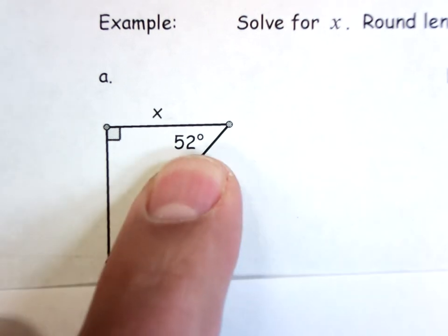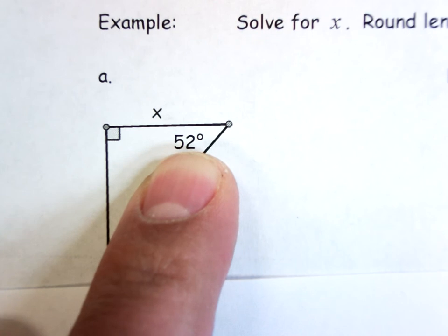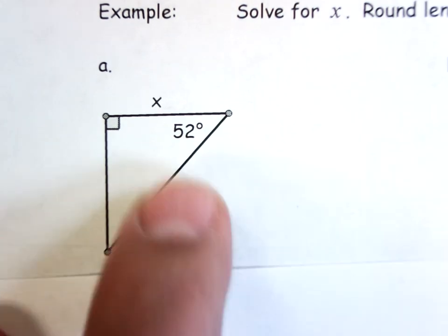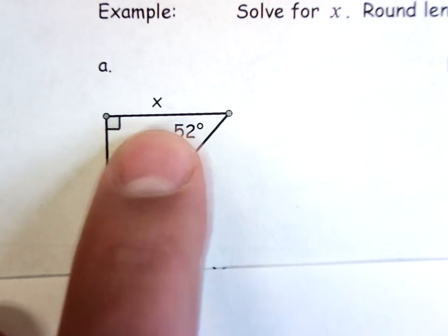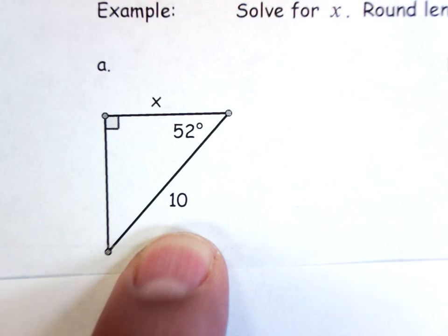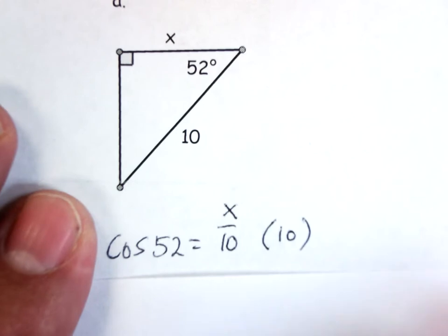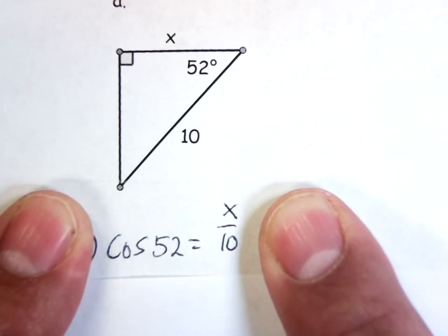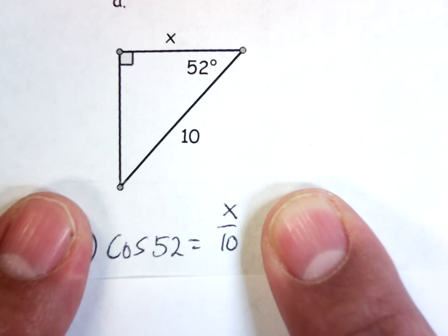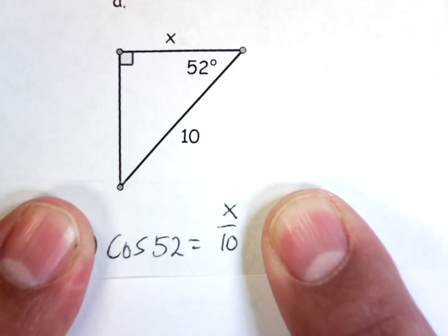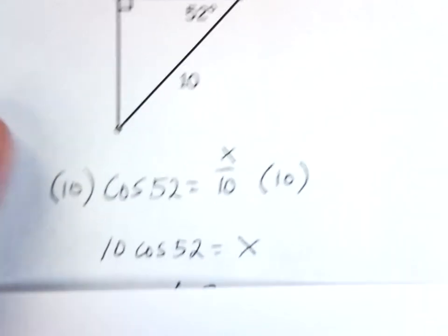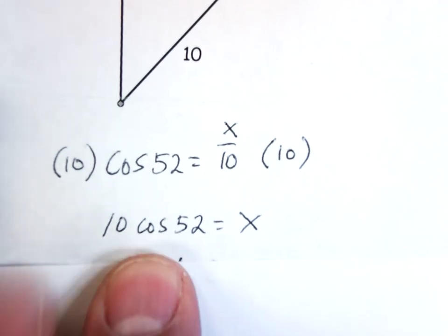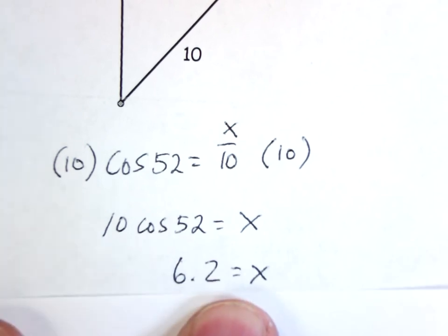I look at my picture — this angle is 52 degrees. It's not a matter of guessing and checking which one to use: sine, cosine, or tan. We just look at the angle we know, the side we want, and the side we know. In relation to this angle, this is the adjacent side, and this is the hypotenuse. Cosine uses adjacent and hypotenuse. So: cosine of 52° = x/10. Multiply both sides by 10, and x = 10 × cos(52°). Put that into the calculator, and x = 6.2.